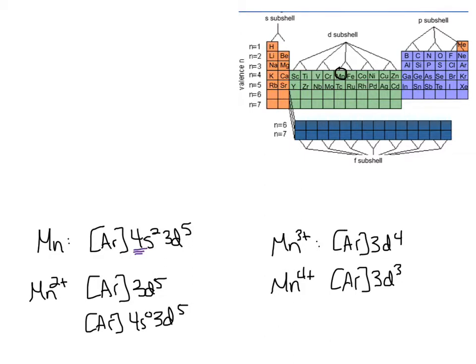So, the moral of the story here is, again, you're always removing electrons from the outermost shell, and then any more that you need can then come from the d block, because the d is really an energy level back.